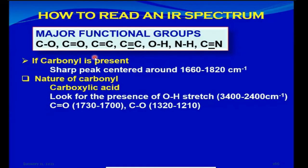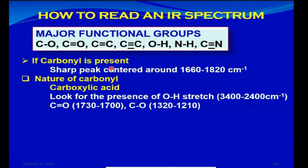The first thing when you have an IR spectrum in your hand is that you see a sharp intense signal right in the center. If you have this sharp intense signal right in the center of the spectrum, that is for the carbonyl functional group. The vibrational frequency for this carbonyl functional group is centered around 1660 to 1820 wavenumbers. Carbonyl groups are of different types: aldehydes, ketones, carboxylic acids, acid halides, anhydrides, amides — that is why you see this wide range from 1660 to 1820.